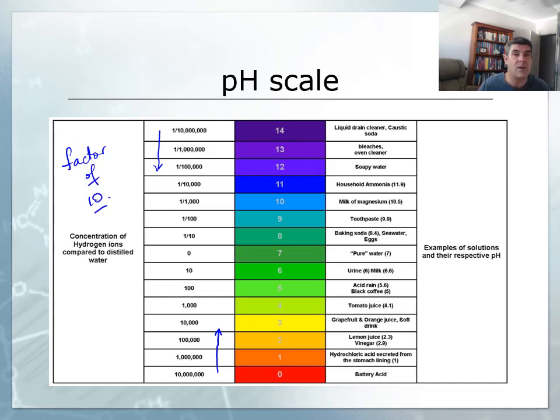This is not a numerical scale, this is actually a logarithmic scale where each single number change on the pH scale actually represents a change in the concentration of the ions of a factor of 10.